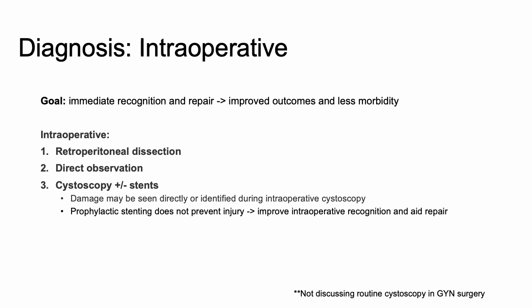The goal is immediate recognition and repair of injuries — ideally intraoperatively. This has been shown to improve outcomes and be less morbid for patients. There are several ways to identify an injury. Direct observation can be both a preventative measure and a way to identify an injury if you see it occur because you knew where the ureter was. You can directly observe the ureter through the peritoneum, or we commonly perform a retroperitoneal dissection and locate the ureter to ensure it is well away from the surgical field.